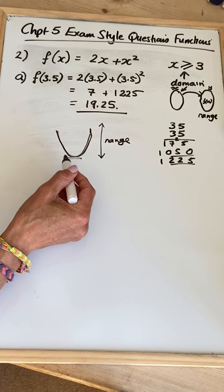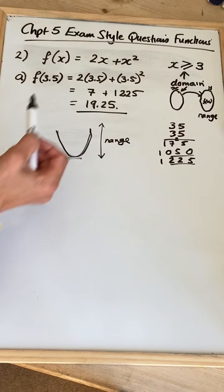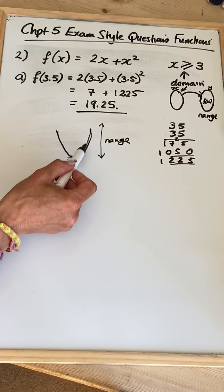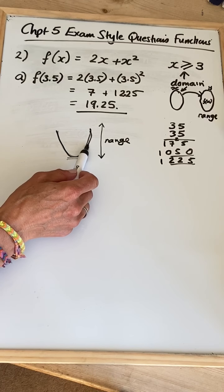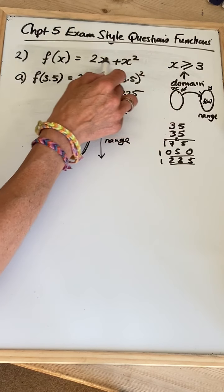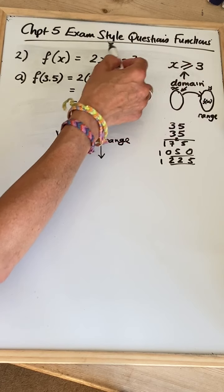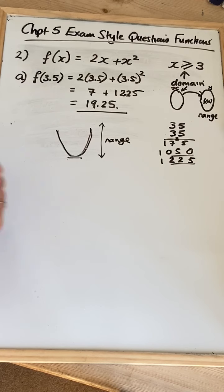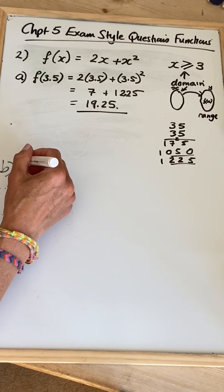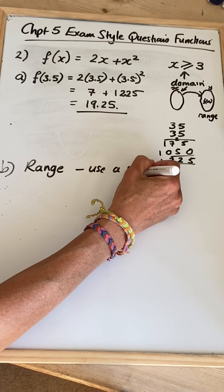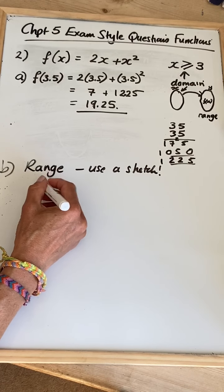With this particular function, we've got a restriction on the domain — the domain starts where x equals 3. I don't know where x equals 3 is on my function; it could be over here somewhere. So what I've got to do is think about what this function actually looks like for x being greater than or equal to 3. I'm just going to sketch my function — and that's always my top tip for range questions: use a sketch.